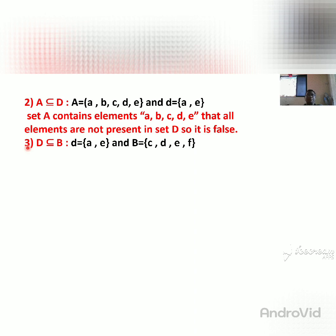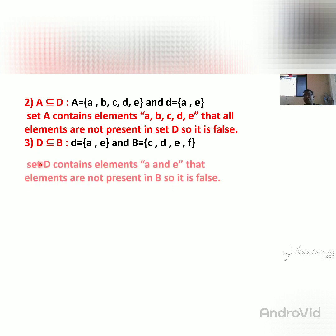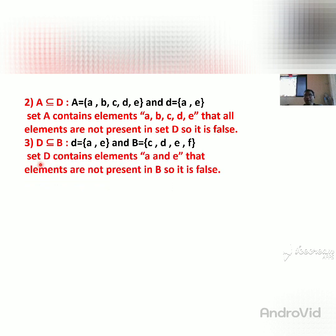Problem number 3: D is a subset of B. The elements of D are A and E. We check if A and E are present in set B. Is A in set B? No, there is no A element in set B. So D is not a subset of B. This statement is also false because element A is absent in B.